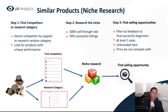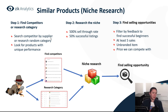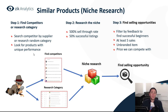Let's go through the three steps of the similar products method. Step number one is to find competitors or research a category, because we need to get ideas for niches. The same as the other method, you should always look for competitors who use the same supplier — search competitor by supplier, or go to the Zeek category research and research random categories. Once you find a competitor or category, look for products with unique performance: products generating a lot of sales, selling at a unique price, or a seller with low feedback that managed to sell a specific product for a higher price.